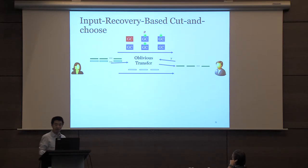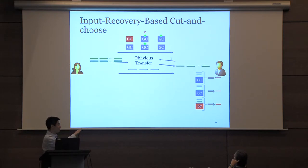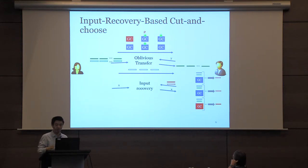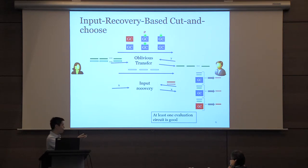More recently, there is a new paradigm called input-recovery-based cut-and-choose. Here we only need a linear number of circuits, which is essentially optimal. Bob evaluates all circuits, some of which may give a flipped result, meaning Bob can obtain both labels for one wire. They then run a small input-recovery protocol where Bob inputs evidence that Alice is not behaving correctly, and the protocol allows Bob to learn Alice's input X, enabling Bob to compute the function locally. This way we just need to guarantee that at least one circuit is good, so we only need a linear number of circuits.